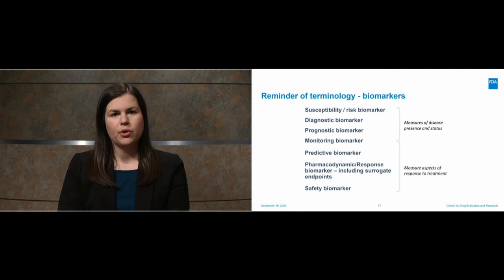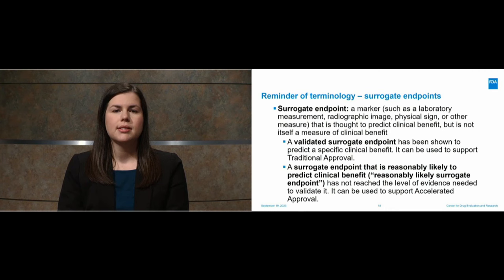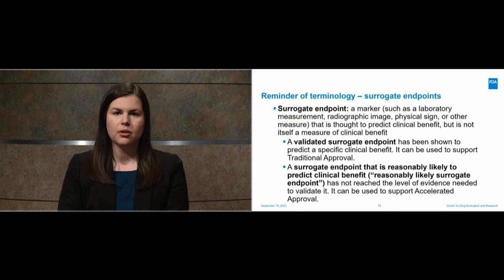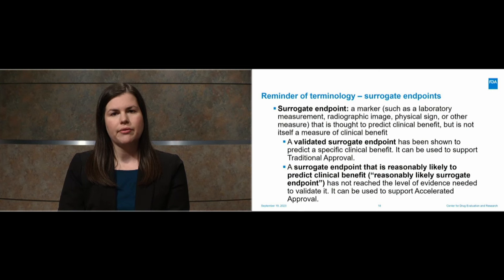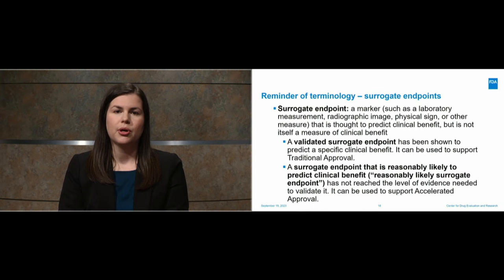There are a range of biomarker types, some of which measure disease presence and status, and some of which measure aspects of response to treatment. A surrogate endpoint is a marker that is thought to predict clinical benefit, but is not itself a measure of clinical benefit. A validated surrogate endpoint has been shown to predict a specific clinical benefit and can be used to support traditional approval, with strong and diverse evidence supporting the relationship of the biomarker and the clinical outcome. A surrogate endpoint that is reasonably likely to predict clinical benefit — sometimes referred to as a reasonably likely surrogate endpoint — has not reached the level of evidence needed to validate it. This type of endpoint can be used to support accelerated approval, and is supported by strong mechanistic and/or epidemiological rationale.